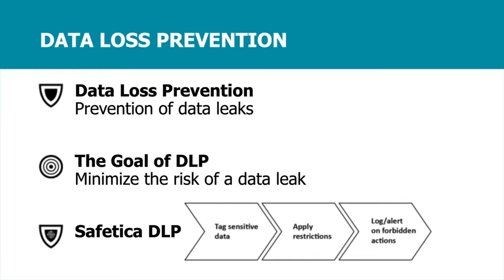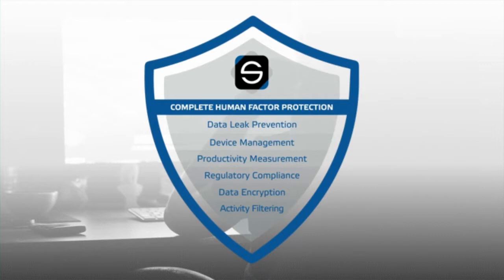For example, personal information tagged as internal can be sent via email only to the company's own domain, and any other action is forbidden. This can be either strictly enforced — blocking the action — or the employee can simply receive a notification that they are doing something wrong. When we combine all these technologies together, we achieve complete human factor protection.